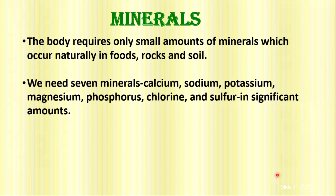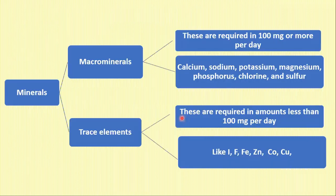The other class of micronutrients is minerals. These are required in small amounts. We need seven minerals — calcium, sodium, potassium, magnesium, phosphorus, chlorine and sulfur — in significant amounts, with the others in much smaller amounts. Minerals are also subdivided into macrominerals and trace elements. Those required in more than 100 milligrams per day are called macrominerals, which include calcium, sodium, potassium, magnesium, phosphorus, chlorine and sulfur. Those required in less than 100 milligrams per day are called trace elements.